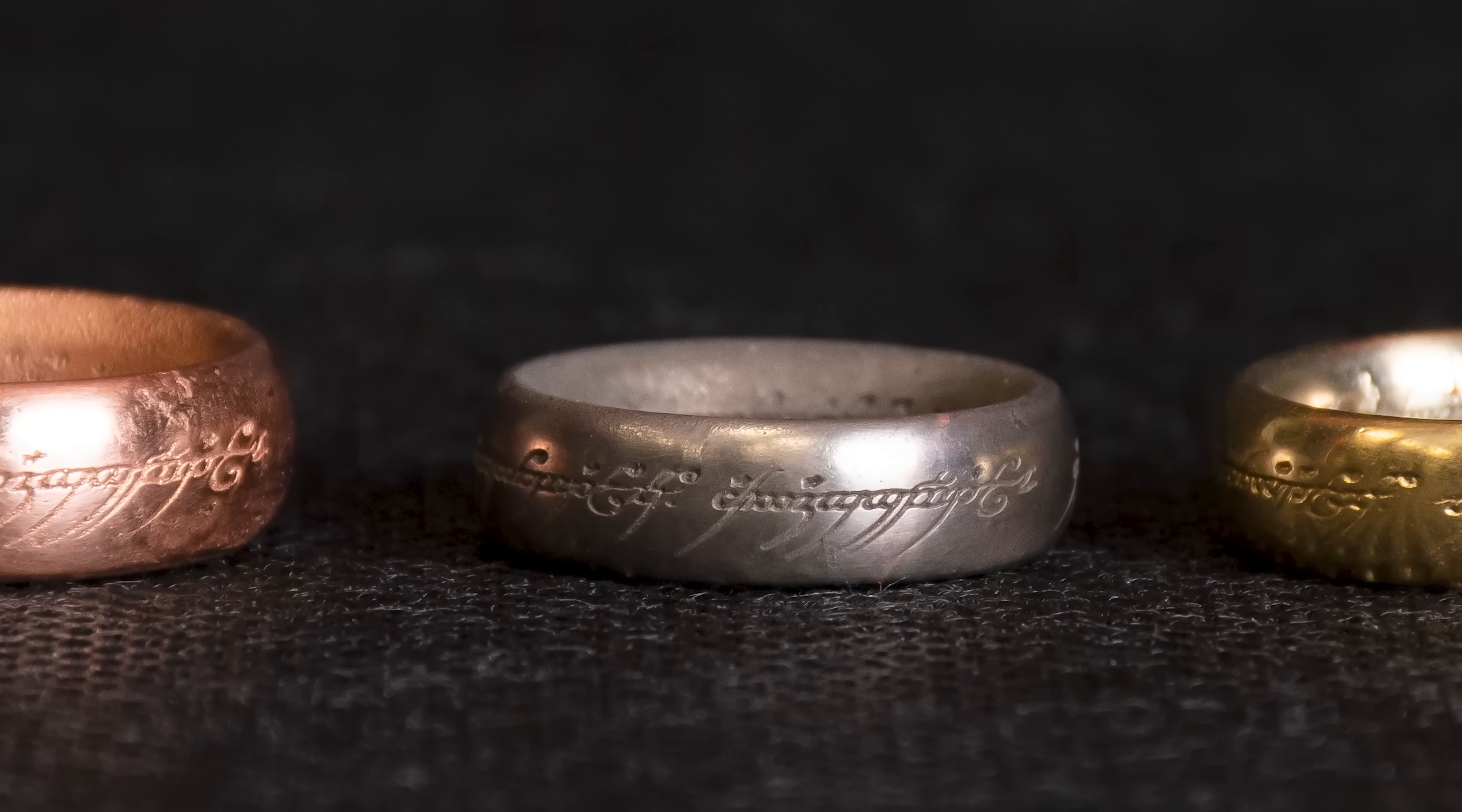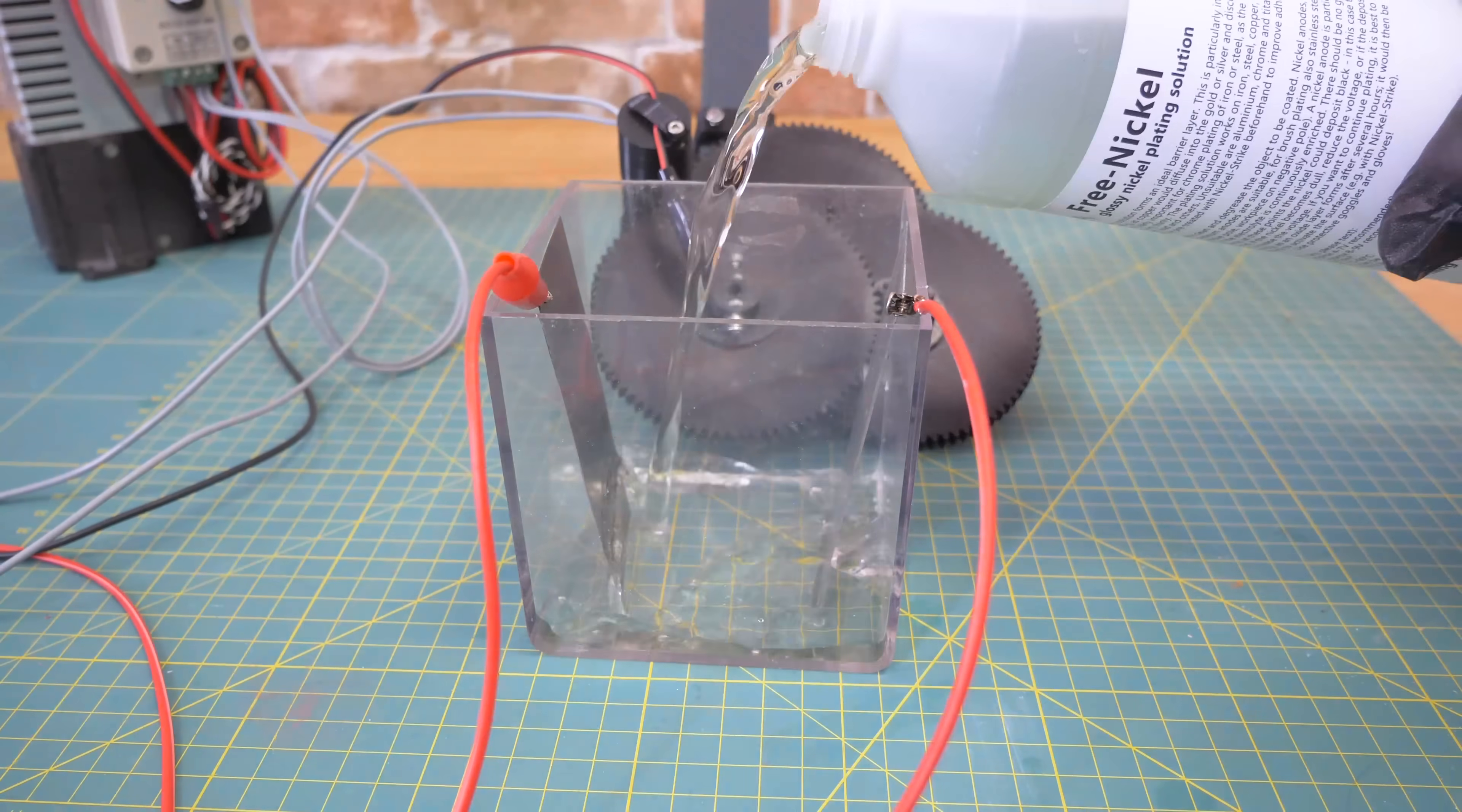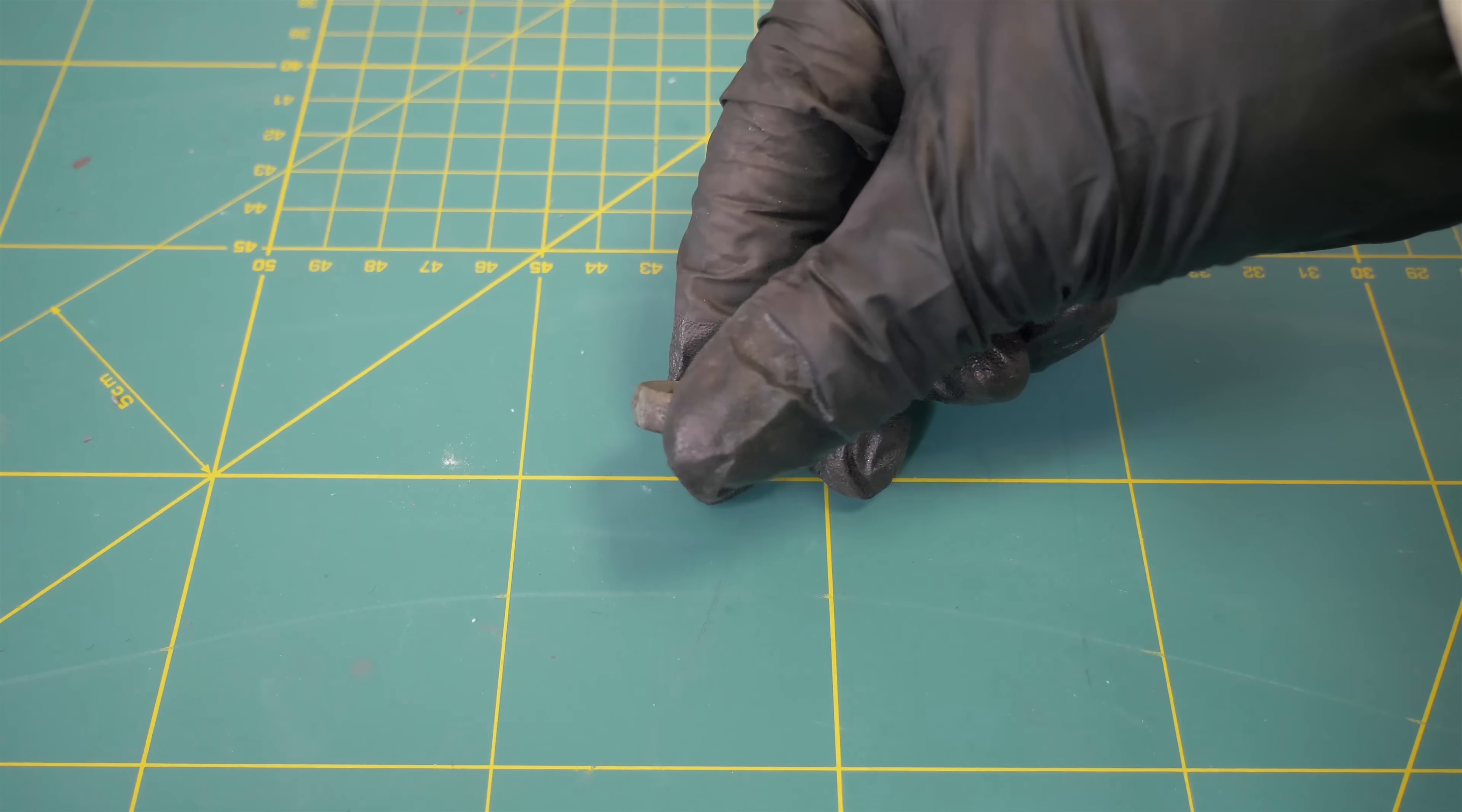That could be, for example, a thin layer of nickel. Switch the anodes from copper to nickel and use a free nickel electrolyte. Again, test the values yourselves, but we recommend starting at 2 volts and increasing the voltage until you see the bubbles. The surface should be metallic silver-ish. If it gets dark, you set the values too high. This process takes around 5 to 10 minutes.